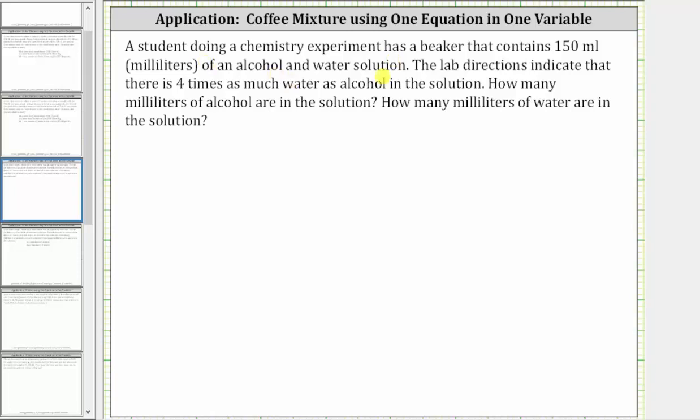A student doing a chemistry experiment has a beaker that contains 150 milliliters of an alcohol and water solution. The lab directions indicate that there is four times as much water as alcohol in the solution. How many milliliters of alcohol are in the solution? How many milliliters of water are in the solution?